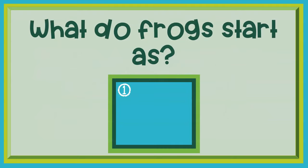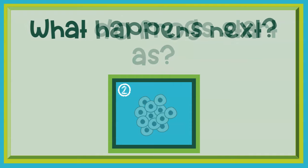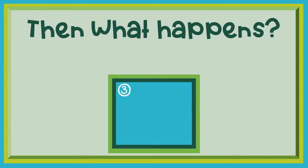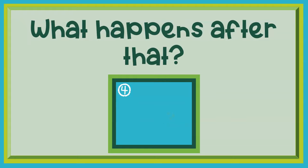What do frogs start as? Eggs. What happens next? A tadpole hatches from the eggs. Then what happens? The tadpole grows two legs. What happens after that? The tadpole grows two more legs — now it has four legs.